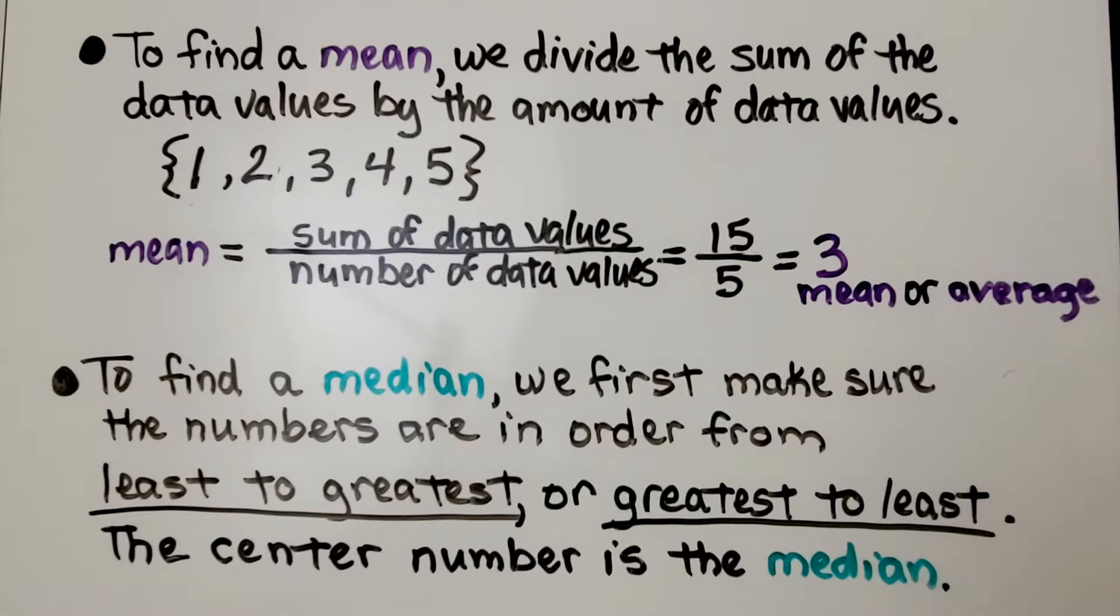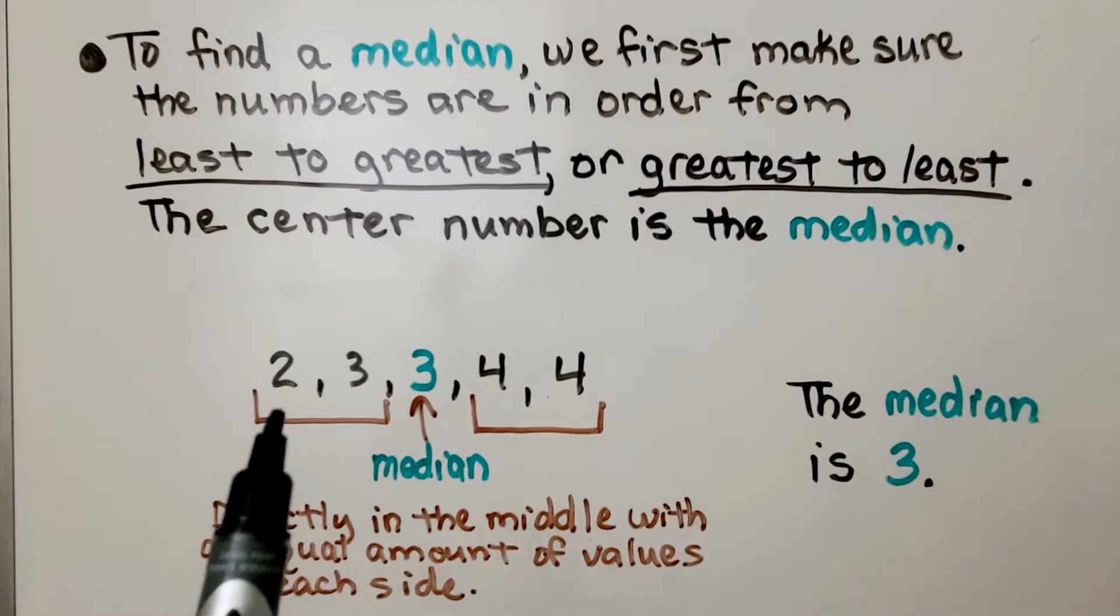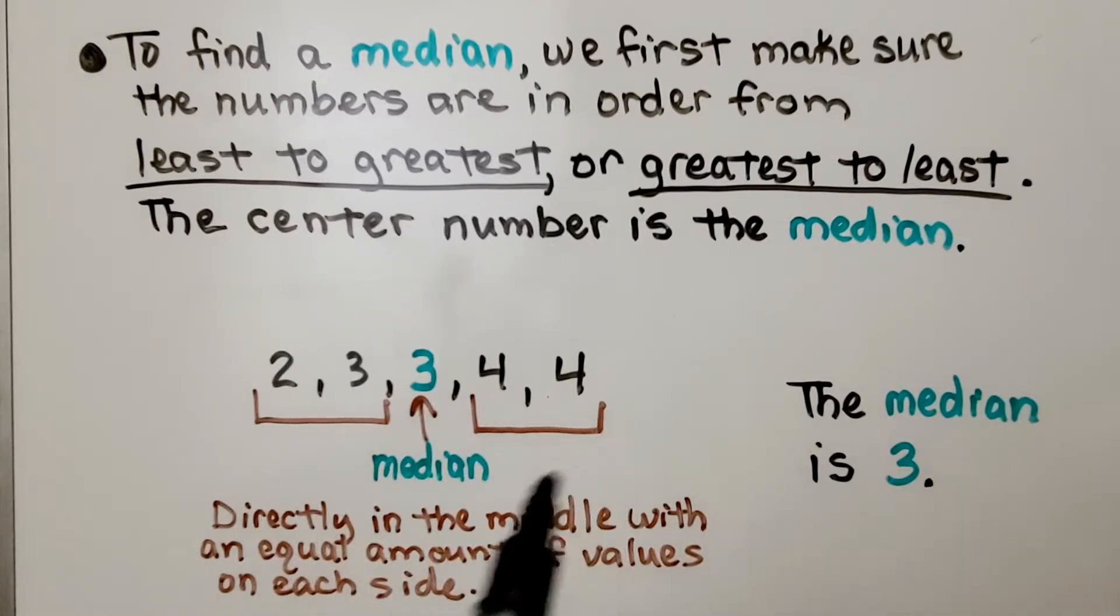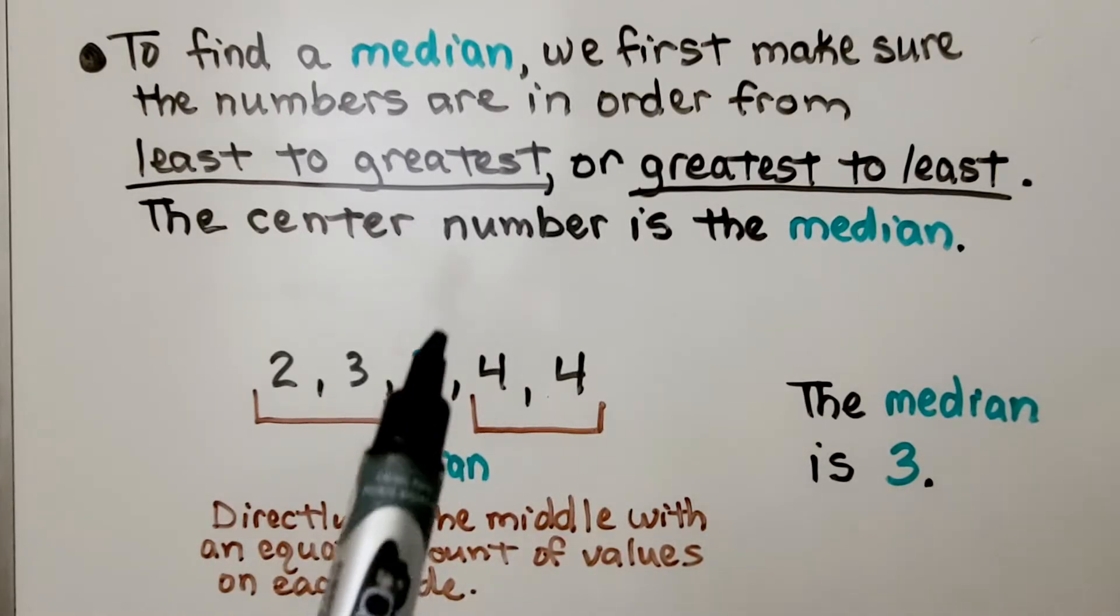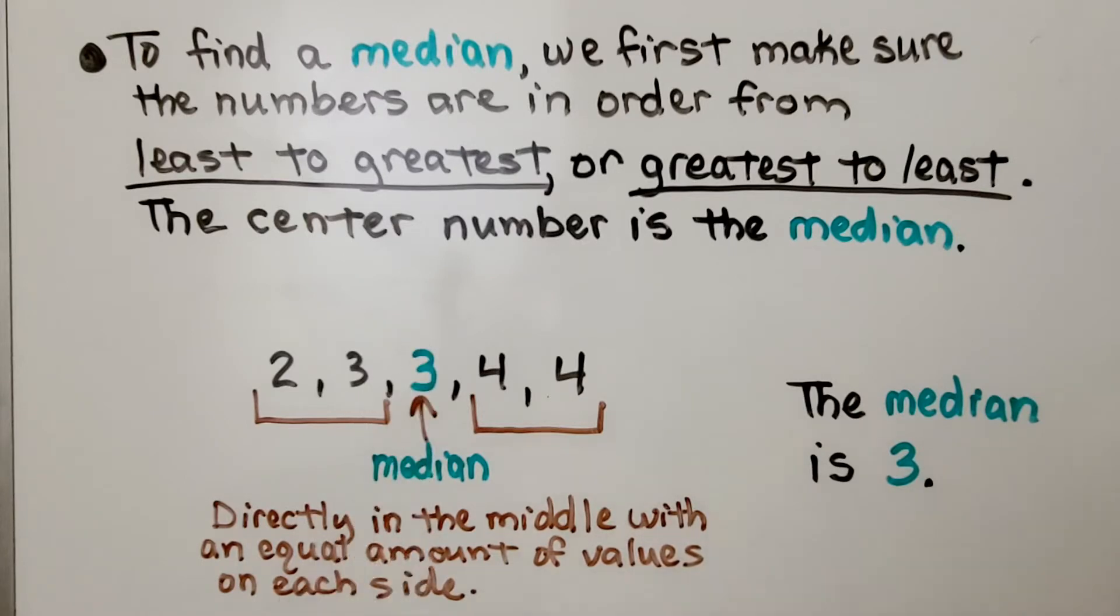And to find a median, we first make sure that the numbers are in order from least to greatest or greatest to least, and the center number is the median. So if our data values were 2, 3, 3, 4, 4, this is the center number, it's the third number out of 5, that's the median. It's directly in the middle.